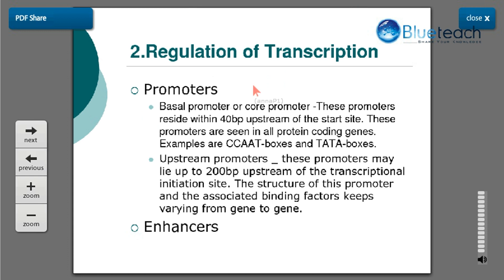Basal promoters are the core promoters that reside 40 base pairs upstream of the start site and are seen in all protein-coding genes — examples are the CAAT box and TATA box. Upstream promoters may lie up to 200 base pairs upstream of the transcription initiation site, and their structure and associated binding factors vary from gene to gene. In total, the entire combination of promoter, enhancer, and transcription factors controls which gene gets transcribed and which gets suppressed.